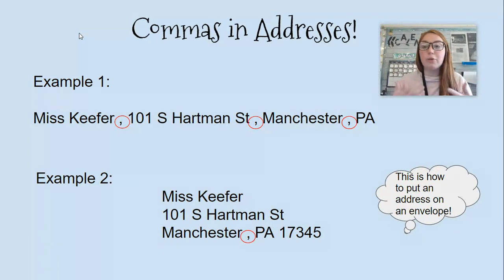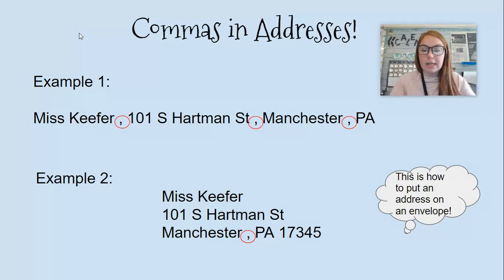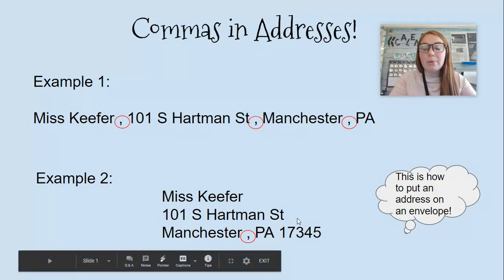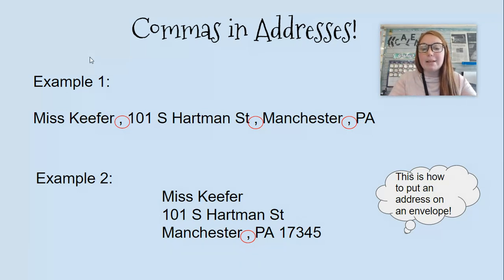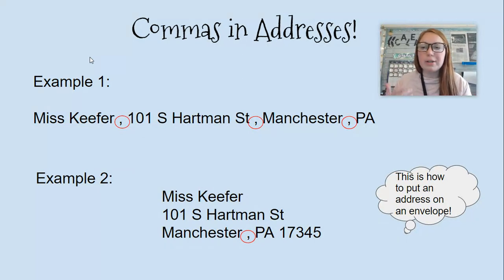If you were mailing something to someone and you had to write out their address, this is how you would do it. It says Miss Keefer on the first line, then 101 South Hartman Street on the second line, and then Manchester comma PA 17345. Those numbers are called a zip code — it's just another way to help the mail carrier locate your house.